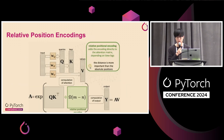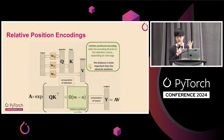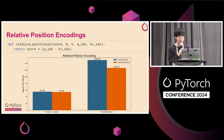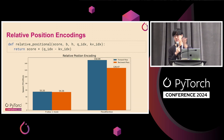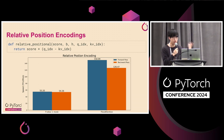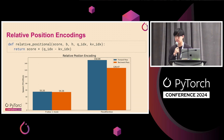Another variant people often want is relative positional encodings, where you want to encode the relative position between two different positions in your attention operation. The way this looks in Flex Attention is very pleasantly simple — you just add qindex minus kvindex, which is the relative position between your query token and your KV token. And notably, it's quite efficient — a lot faster than using the PyTorch default attention APIs with a fully materialized mask.